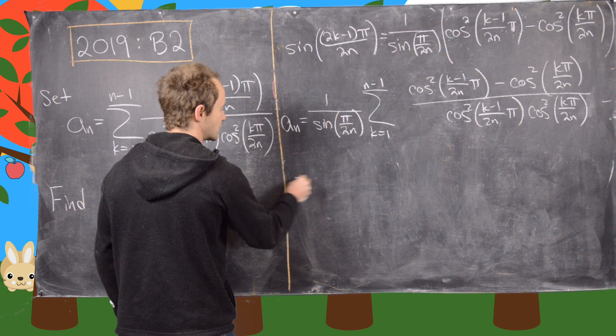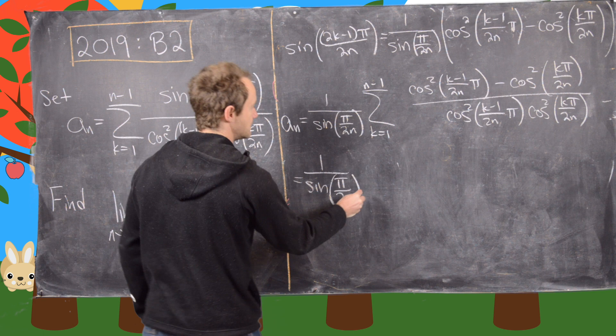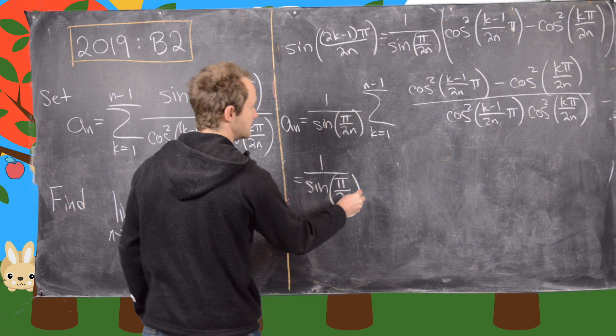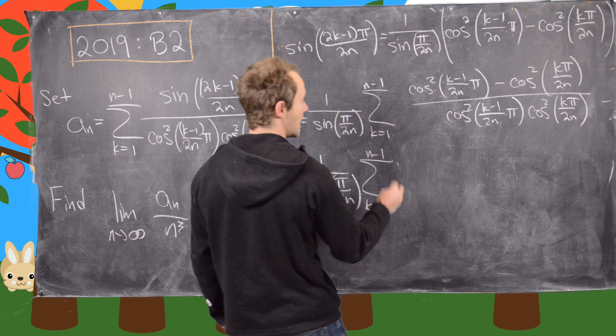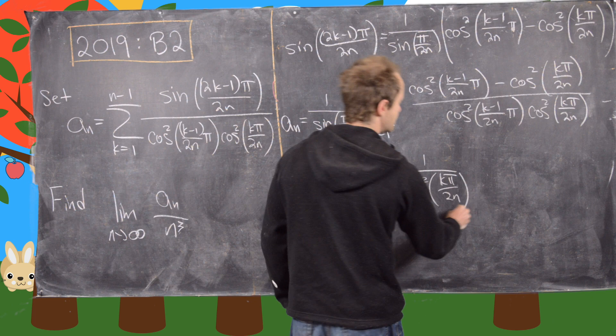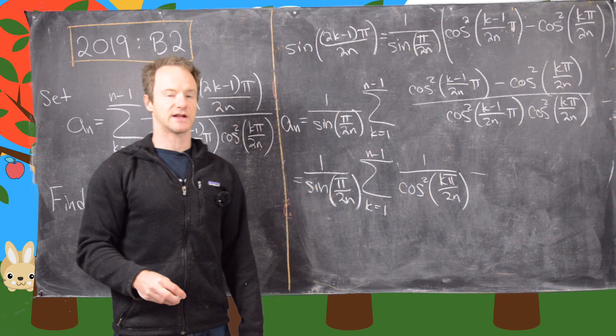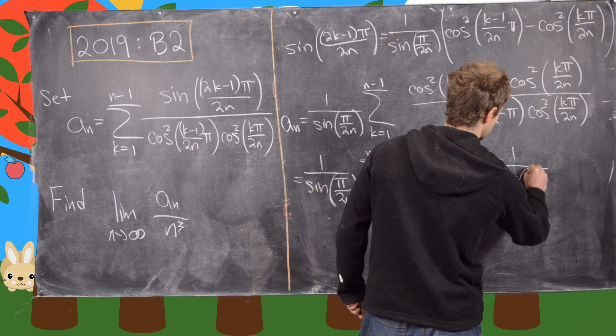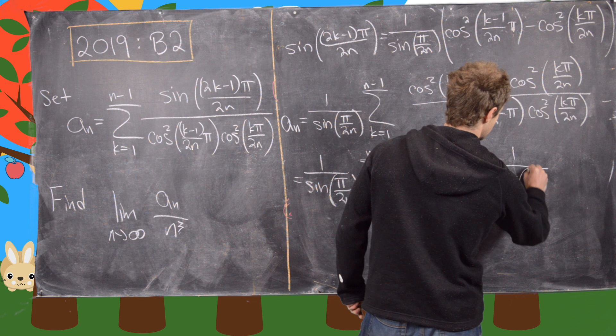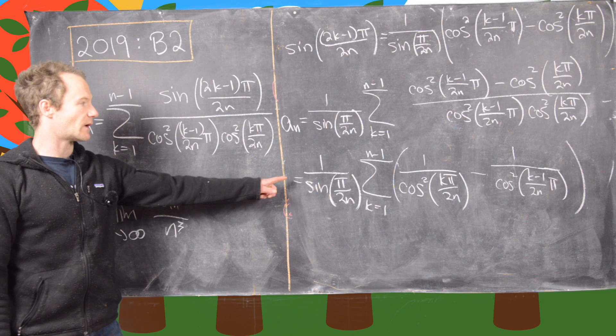The next thing we can do is split that up and cancel. That gives us (1/sin(π/2n)) times the sum from k=1 to n−1 of [1/cos²(kπ/2n) − 1/cos²((k−1)π/2n)], where in the first part the cos²((k−1)π/2n) term cancels, and in the second part the cos²(kπ/2n) terms cancel.